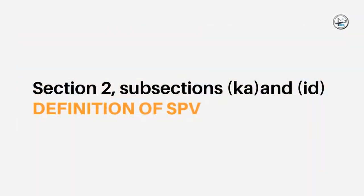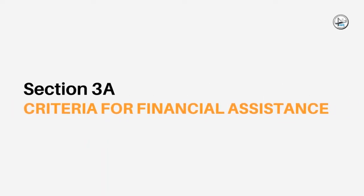Section 2, Subsections K.A. and I.D. discusses the detailed definition of SPVs. Section 3.A. lays down the criteria for projects in order to get financial assistance. These projects are referred by the government to the board. The board approves the projects which satisfy a set of criteria.